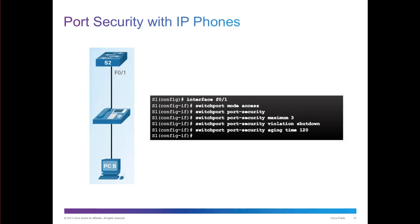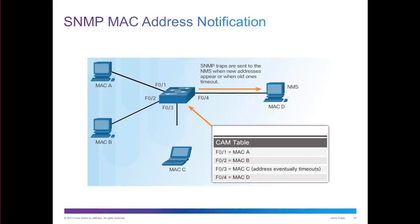You can also do port security with phones — enabling port security, learning three MAC addresses, setting violation mode to shutdown, and aging time to 120 seconds. You can also do SNMP MAC address filtering or notifications, where SNMP traps are sent to the appropriate network management station with addresses, or when old ones age or time out.